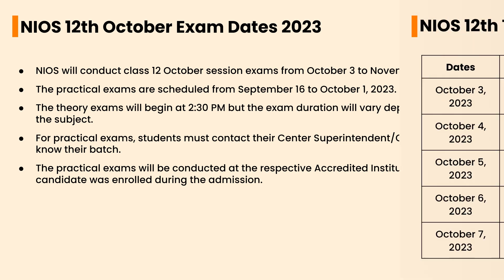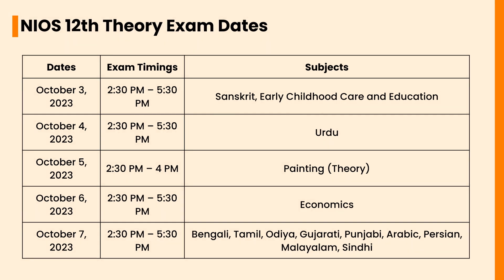Let's check the NIOS Class 12 theory exam dates. On October 3, 2023, the exam timings will be 2:30 PM to 5:30 PM and the subjects are Sanskrit and Early Childhood Care and Education. On October 4, 2023, the exam timings are 2:30 PM to 5:30 PM and the subject is Urdu. On October 5, 2023, the exam timings are 2:30 PM to 4:00 PM and the subject is Painting. On October 6, the exam timing is 2:30 PM to 5:30 PM and the subject is Economics.